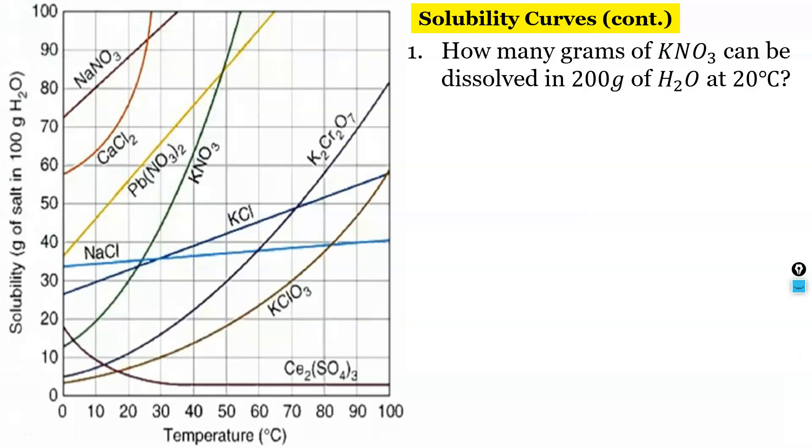So here's a more complicated graph. I've got a bunch of things going on here. How many grams of KNO3 can be dissolved in 200 grams of H2O at 20 degrees? Okay well we have a little bit of a problem here. So this says 100 grams of H2O and this is asking about 200 grams of H2O.